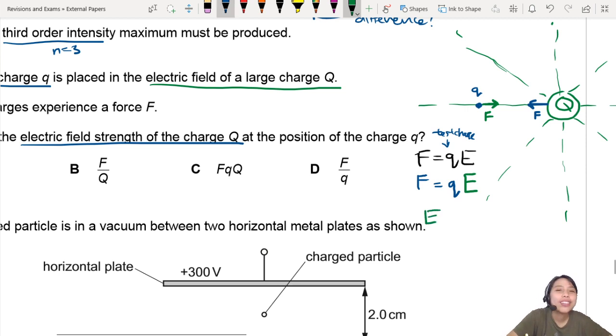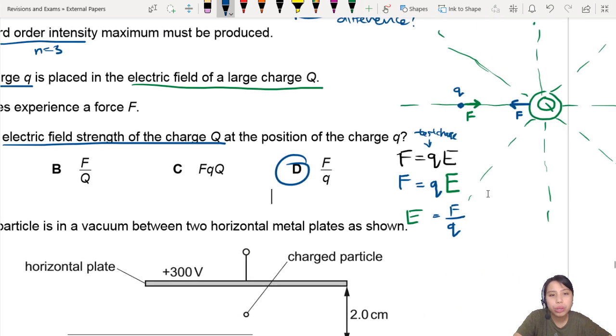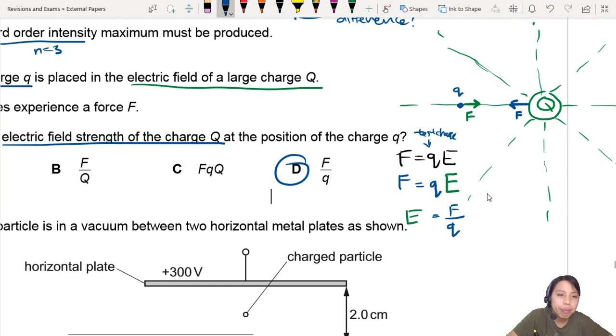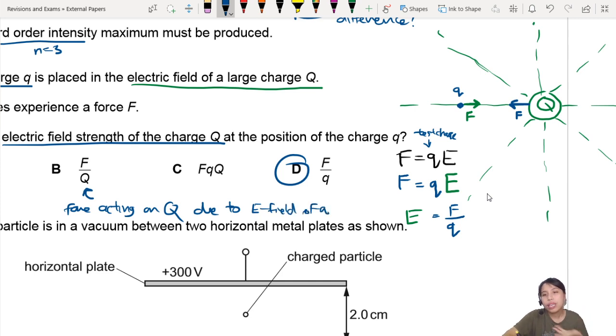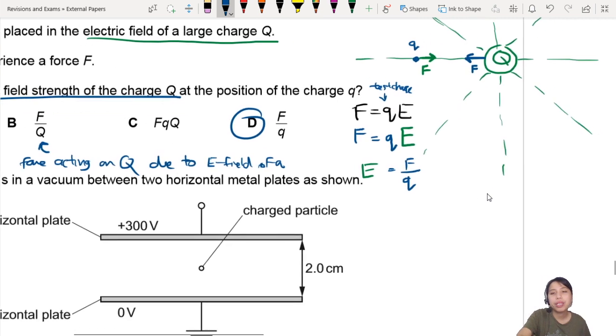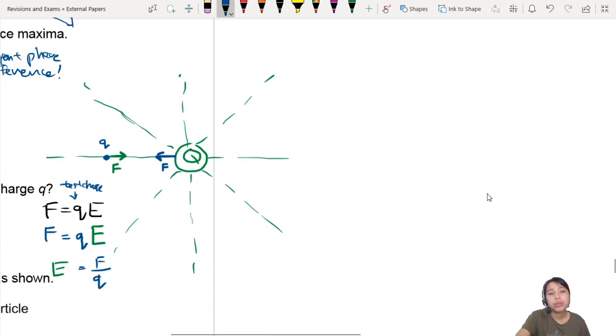And we're trying to find E. So therefore we can say F over q. This one. Don't confuse it with B, because it's like F over Q, F over q. How do I know which one is it? If you are looking at B, this is looking at the force acting on Q due to electric field of q. So it's a different perspective. If I want to find the answer for B, I would draw this picture differently. Maybe I would draw this instead.